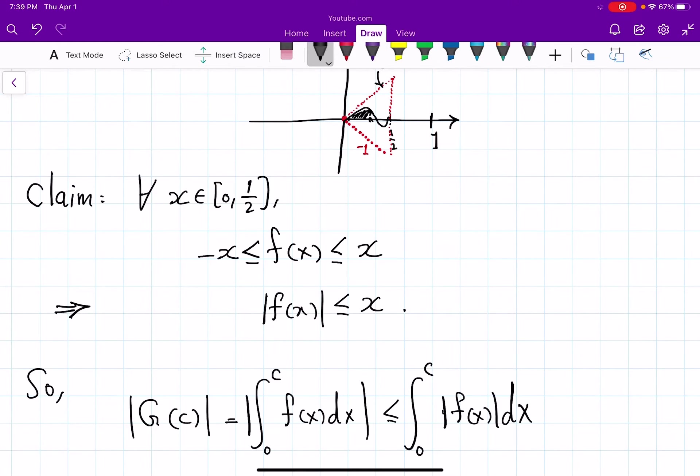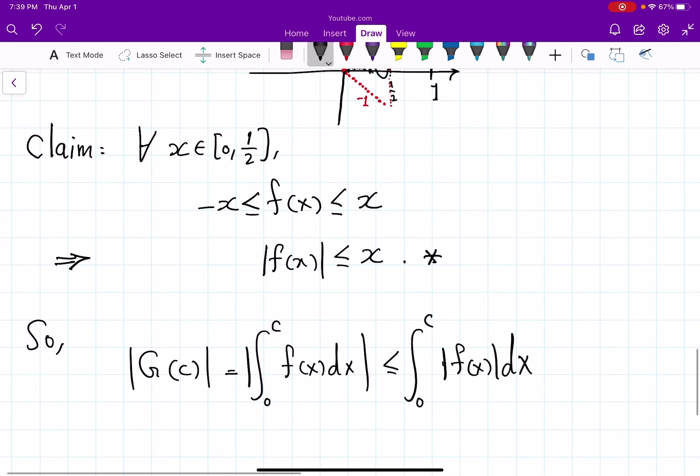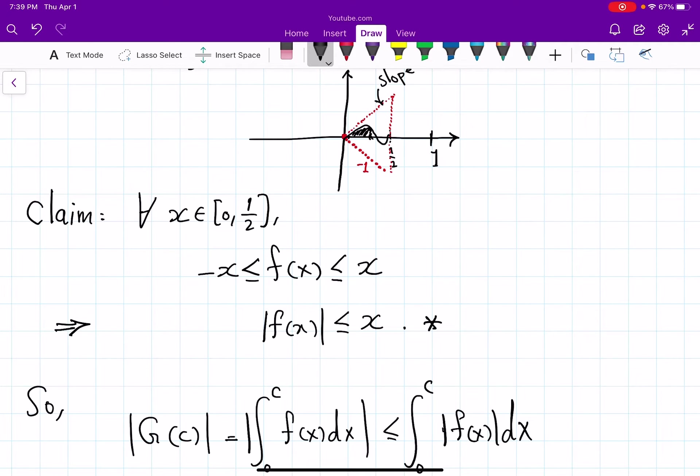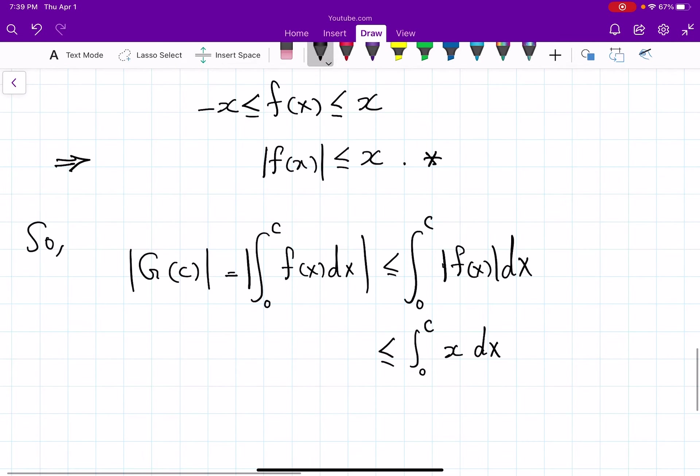Okay, and now here is where I use my inequality from above. So this will be from 0 to c x dx. Okay, so I'm saying that the area under my absolute value of f, which I know remains within the red triangle, is never going to be bigger than the area I produce with the full triangle until point c.